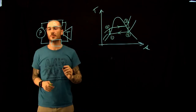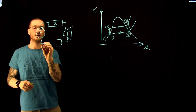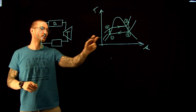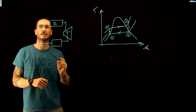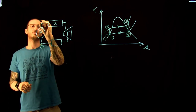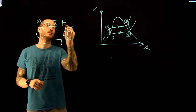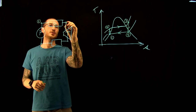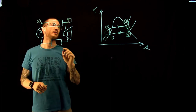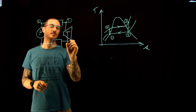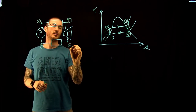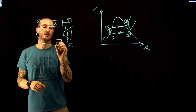Putting our points on the diagram: point one is where we have our saturated liquid water, point two is where we increase our pressure, point three is right out of the boiler at our maximum temperature, and point four is through our turbine.